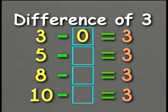In the second number sentence, 5 minus what number equals 3? Correct again, 5 minus 2 equals 3.